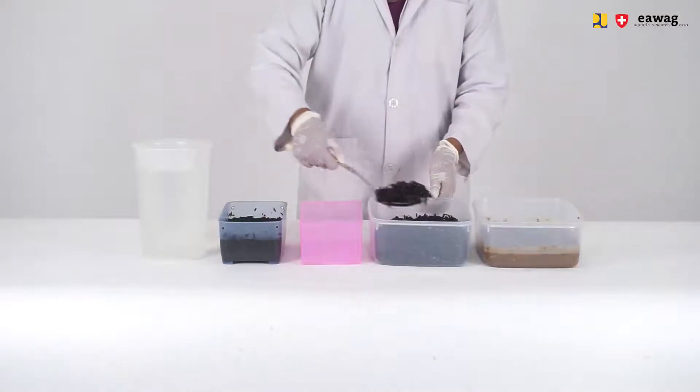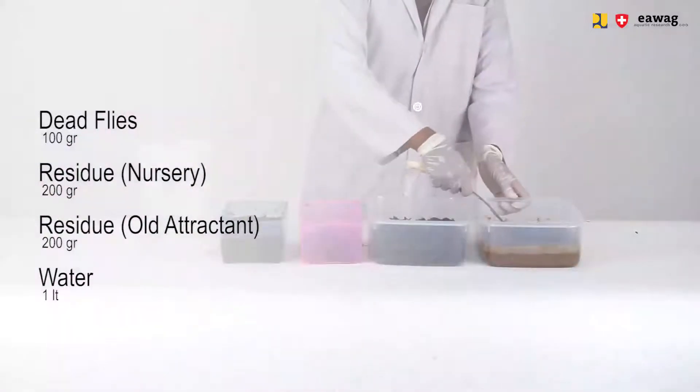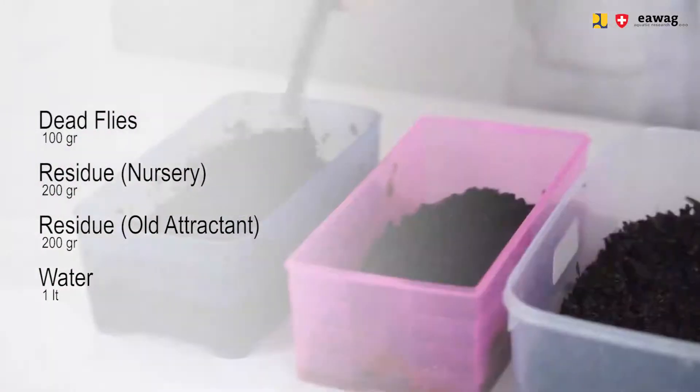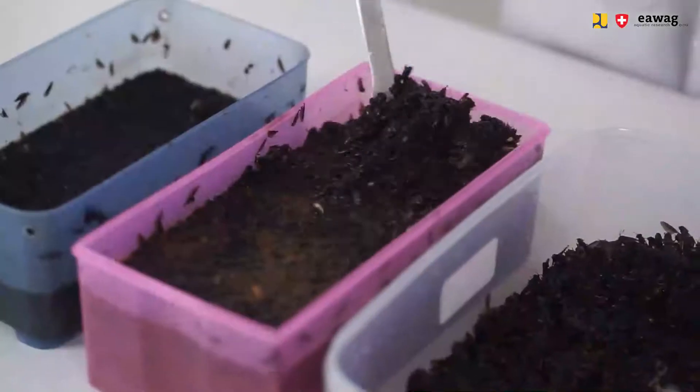Prepare the attracting container by filling an empty attracting container with 100 grams of dead flies, 200 grams of residue from the nursery container, 200 grams of residue from the old attracting container, and 1 liter of water. Mix thoroughly.